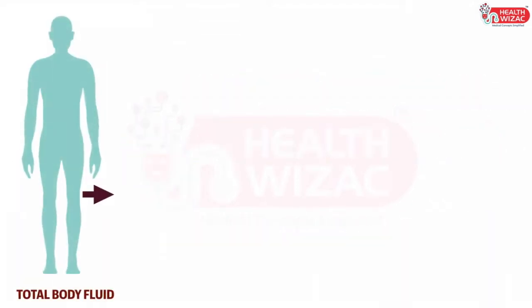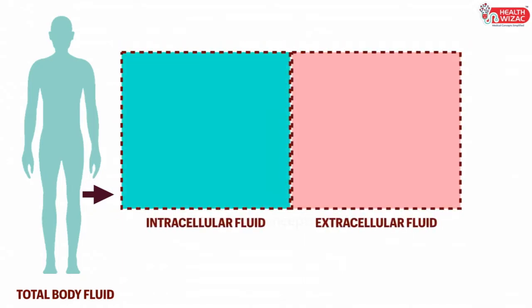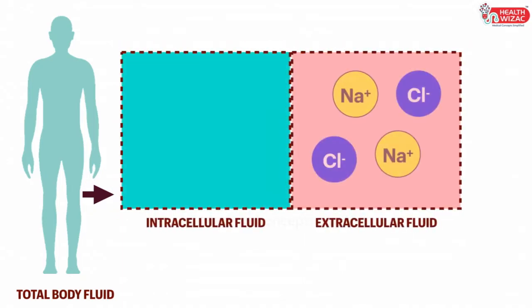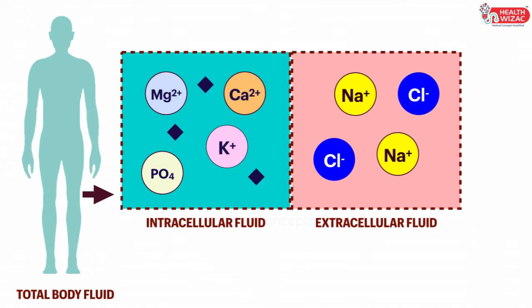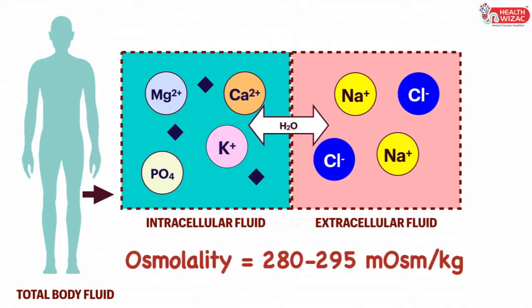Body fluid is primarily subdivided into two compartments, the extracellular fluid and the intracellular fluid. Sodium is a very important electrolyte of the extracellular fluid along with chloride, whereas the intracellular fluid comprises of potassium, magnesium, calcium, phosphate, and protein molecules. Water is free to move in between these two compartments. At any given scenario, body tries to maintain the osmolality level of both the ICF and the ECF to approximately between 280 to 295 milliosmoles per kg.